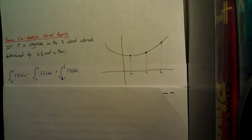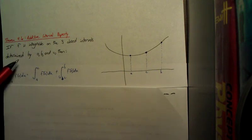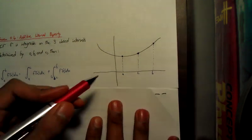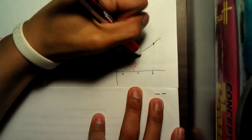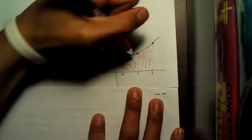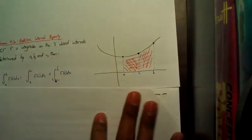This one, additive interval property, if f is integrable on the closed interval as determined by a, b, and c, then all it says is that this one plus this one equals the area of the whole thing.